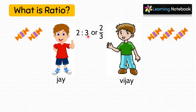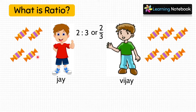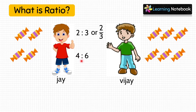Now, suppose the next day, the mother also gave 2 chocolates to Jai and 3 chocolates to Vijay. Now, count the number of chocolates each of them have got. Jai has 4 chocolates and Vijay has 6. So the ratio now becomes 4 is to 6, or we can call it 4 by 6.